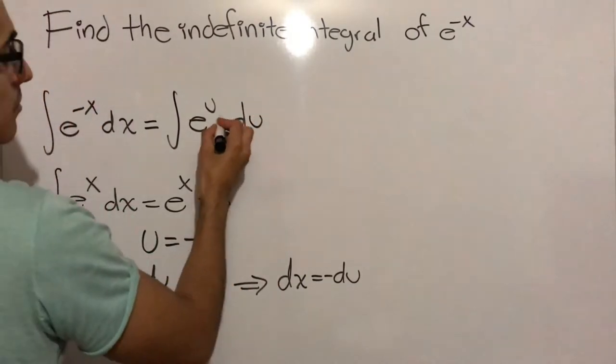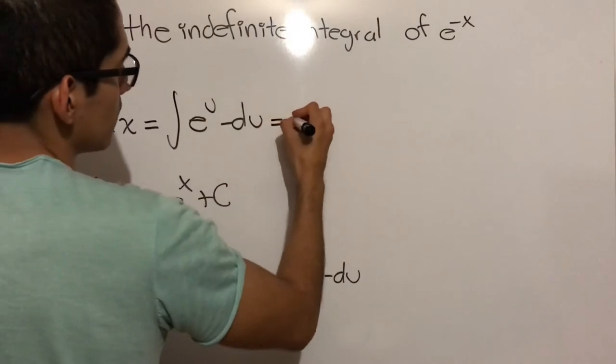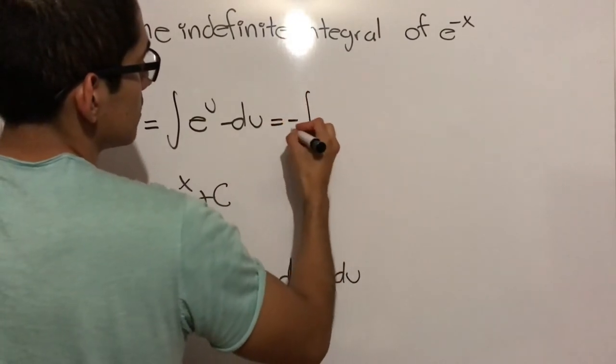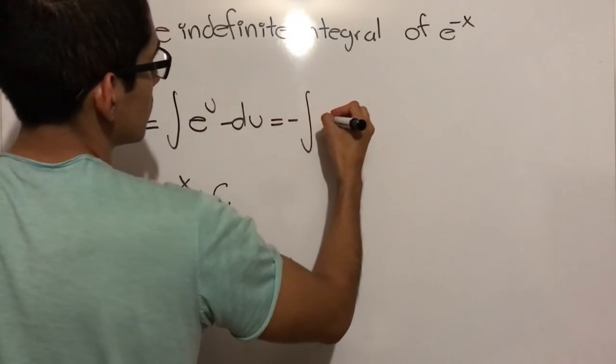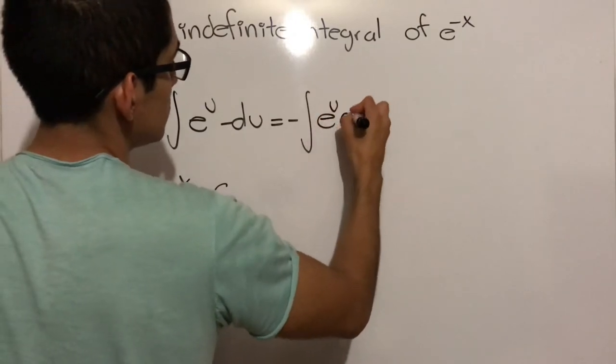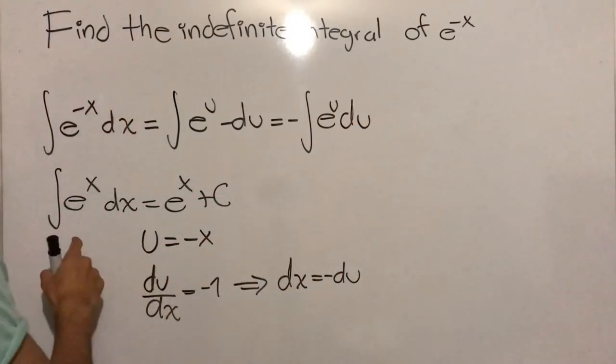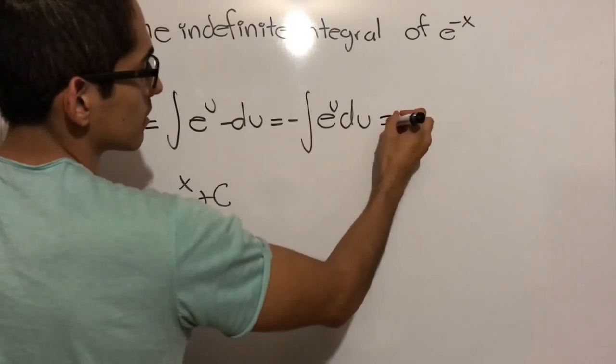We can take this minus 1 out of the integral and we will get minus the indefinite integral of e to the u du. So we have this form already and we can apply the result.